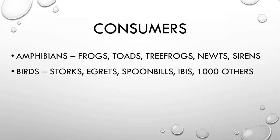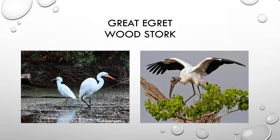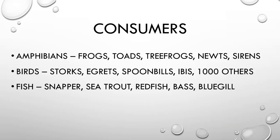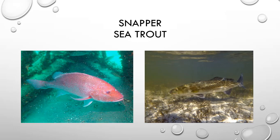Other consumers include birds. I'm going to focus on the wading birds — those that live in and walk through the water. Keep in mind there are thousands of other birds too: migratory birds, bluebirds, robins, mockingbirds, and any bird from the eastern United States. But the wading birds include storks, herons, egrets, spoonbills, and ibises. I specifically picked the great egret — the white one on the left — and the wood stork on the right.